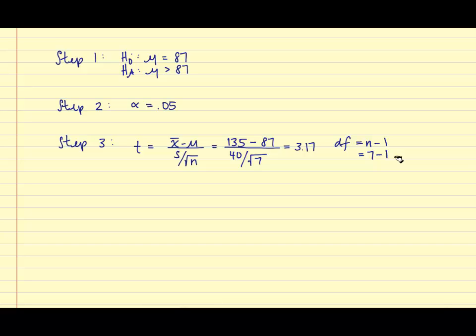For step number 4, we're going to determine the critical value. Recall the critical value is based on the level of significance and the direction of the alternative hypothesis. And so, if we draw this out, we'll have a right-tailed test because the alternative was greater than. And so, we'll have area shaded to the right.